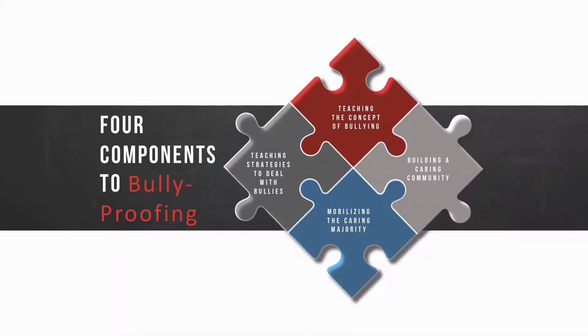Just to wrap up, there are four components to bully-proofing, and we've gone through all of them in these three modules. The first is teaching the concepts of bullying, and this is for everyone within the school community — the students, the parents, and all of the educators as well as teacher assistants — everybody involved with working with the children needs to have a common language and a common understanding about bullying.